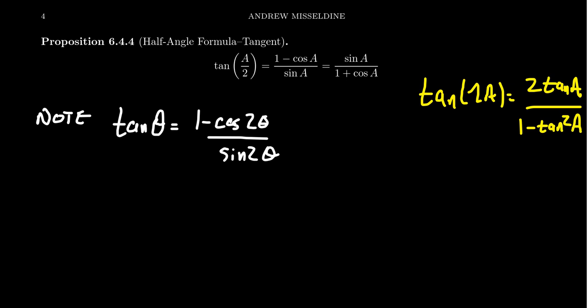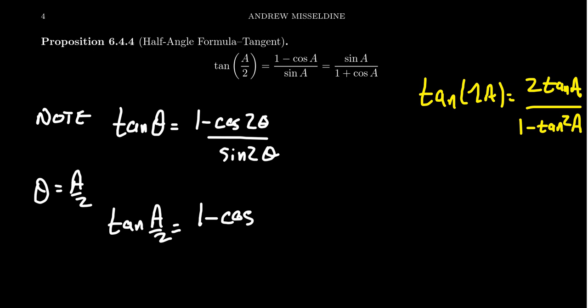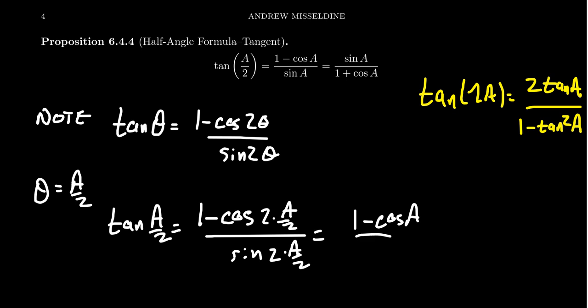What we do is play around with the angles. If you replace theta with a over two — just put in the half angle — then the left-hand side becomes tangent of a over two. The right-hand side gives you one minus cosine of two times a over two, over sine of two times a over two, which simplifies to one minus cosine of a over sine of a.